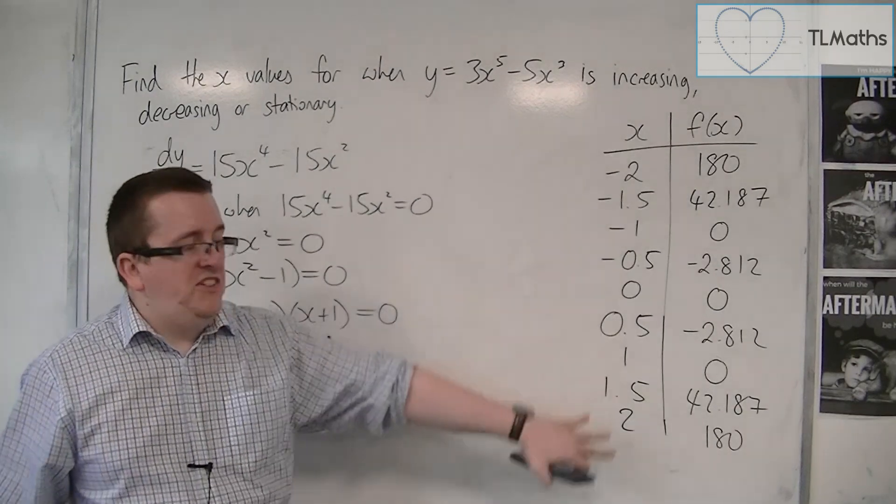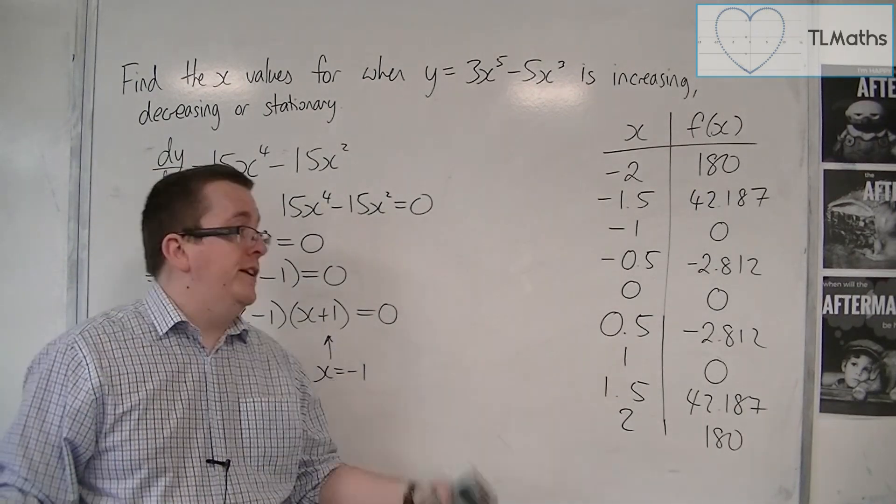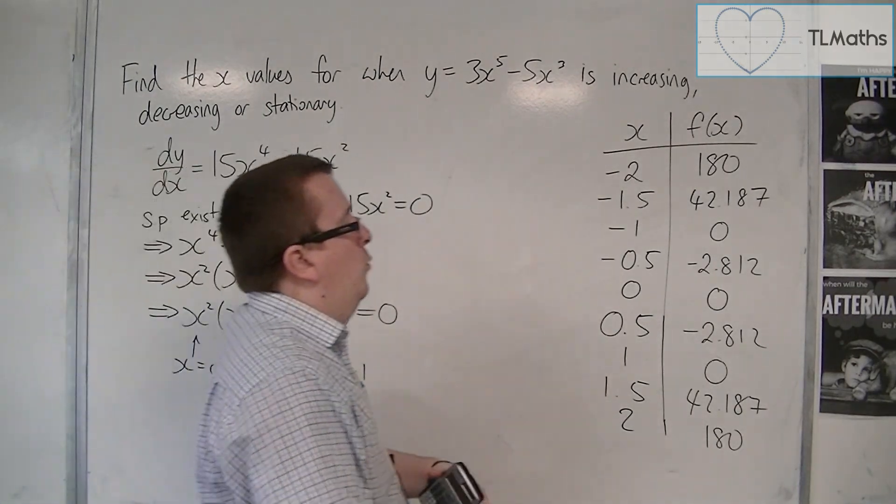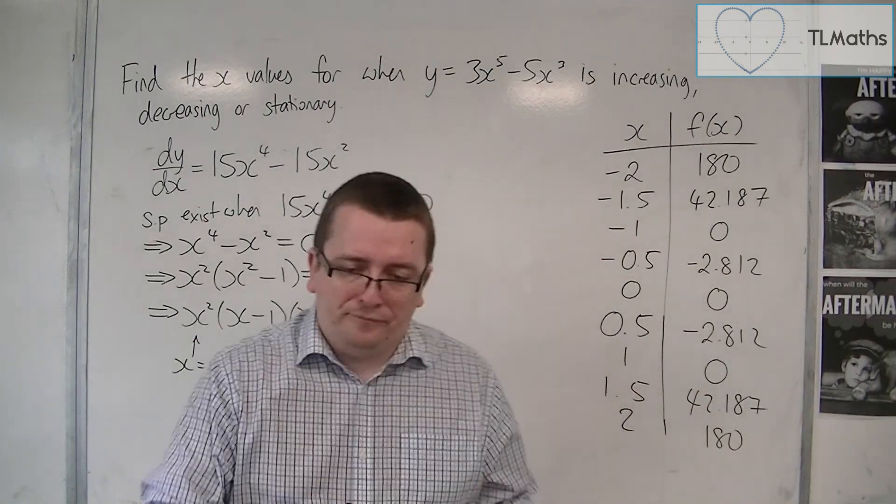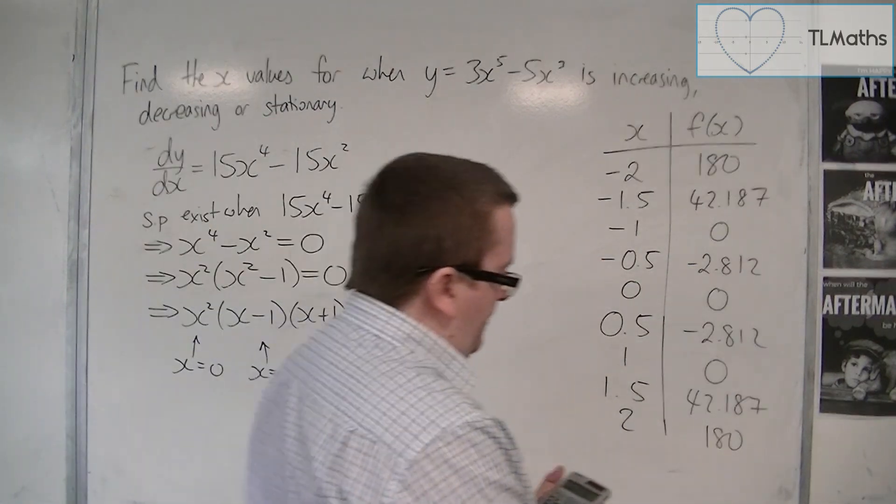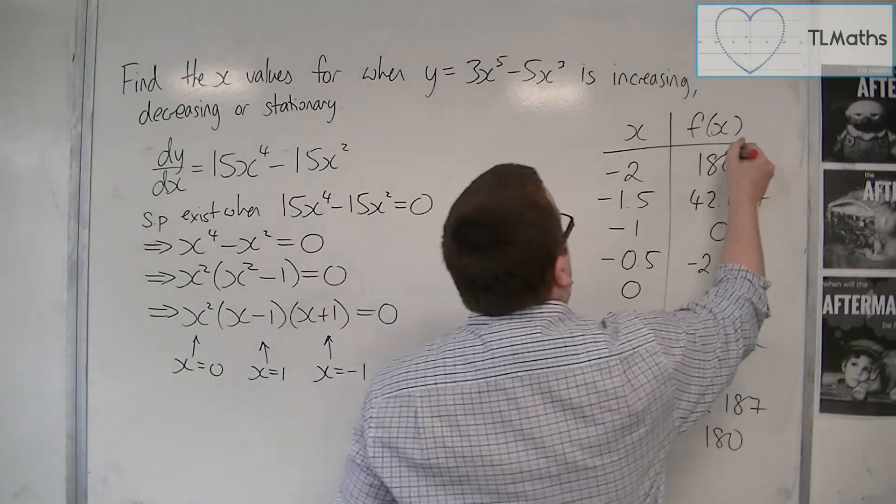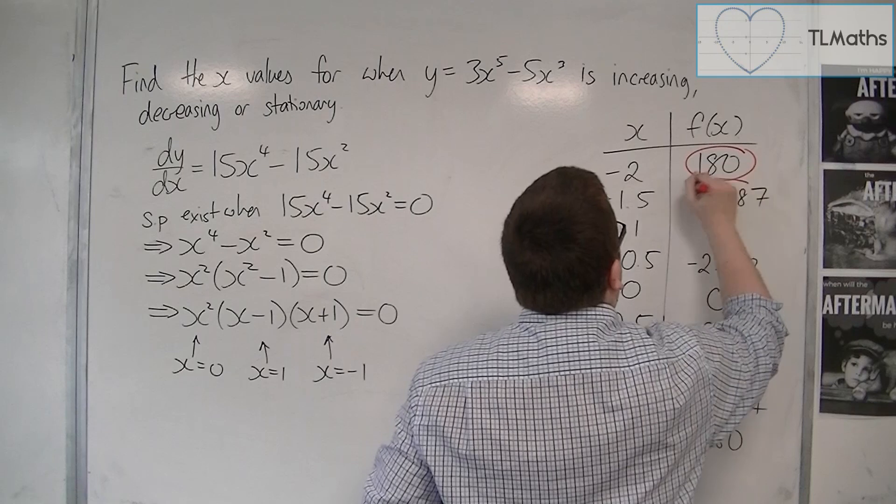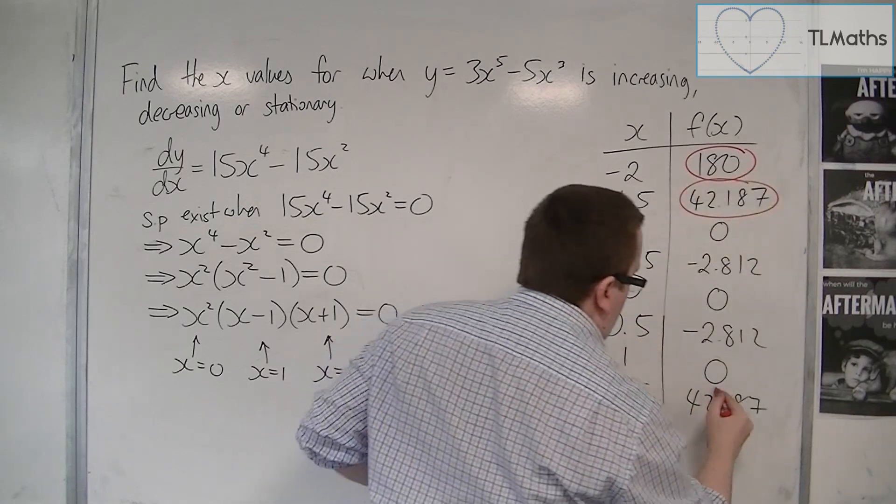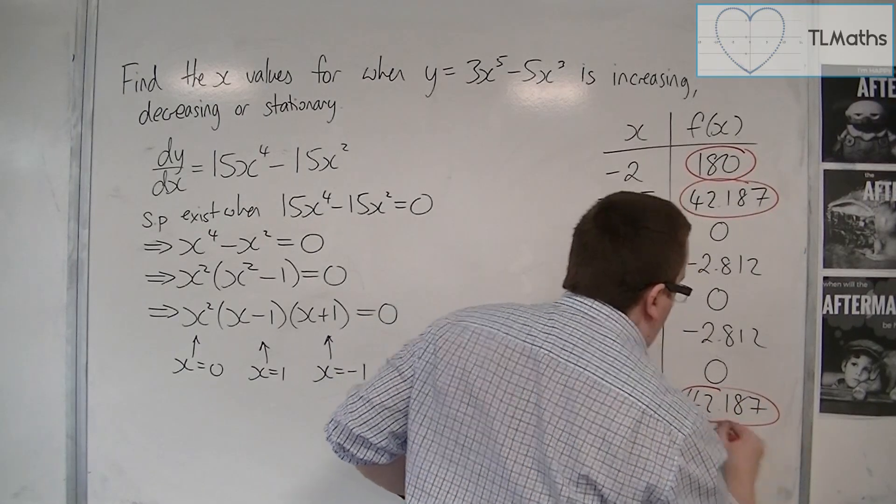And what I want to identify is where it is positive, where it is negative, and where it is stationary. So we've got a positive gradient there, and a positive gradient there, and one there, and one there. So I can tell that the curve is increasing.